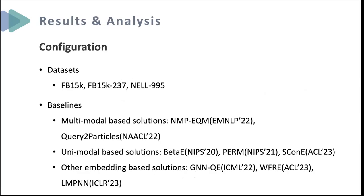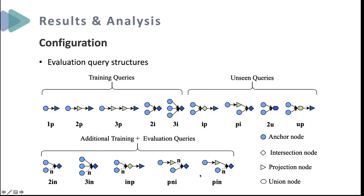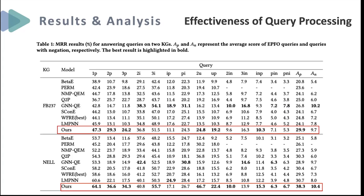We evaluate the proposed Query2GMM on two knowledge graph benchmark datasets, compared with eight existing approaches including multimodal-based, unimodal-based, and other embedding-based solutions. Following the setting of baselines, we use 14 types of queries based on first-order logic. We can observe from the table that our Query2GMM significantly outperforms all baselines in most cases, demonstrating the effectiveness of our proposed GMM embedding backbone coupled with our neural operators in accurately representing complex logical queries.